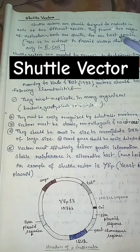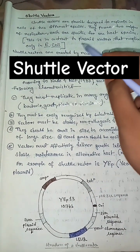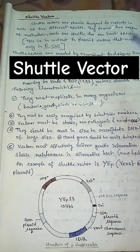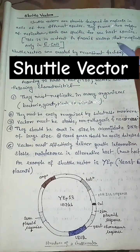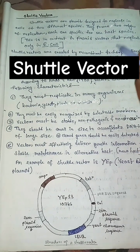Shuttle vectors are plasmids designed to replicate in cells of two different species. They possess two origins of replication, each one specific for one host species.